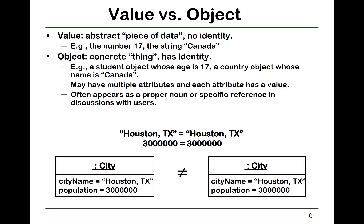But objects are different. An object is a concrete thing that has identity. Having identity means that for two objects, even if all their attributes have the same value, they are still two different objects. For example, these are two city objects where each attribute has the same value, but they are still two different objects — in a computer, they occupy different memory.